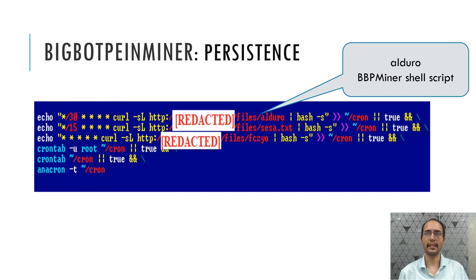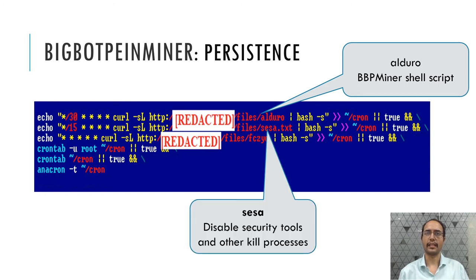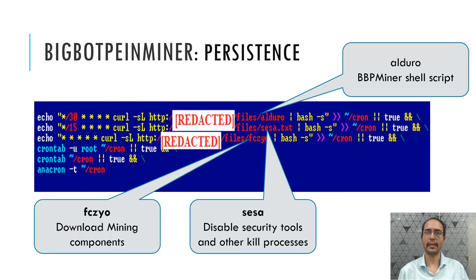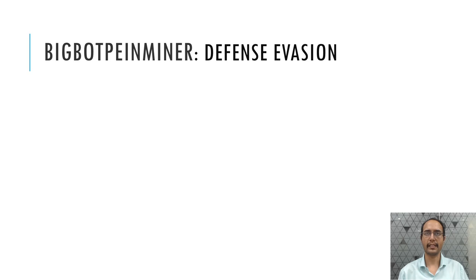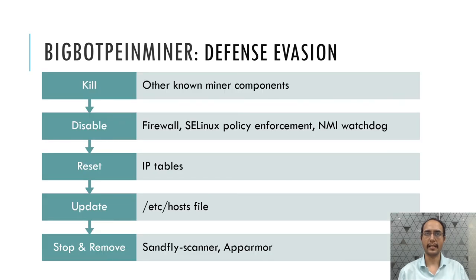For persistence, it schedules cron jobs to execute three shell scripts: the first is the BigBotPen Miner itself, the second is ssa.txt which ensures seamless execution, and the third downloads mining components. For evading detection, it looks for traces of competing miner components and kills them. It disables policy enforcement tools like SELinux, and updates the hosts file to block network connections made by competing miners to their mining pools, and also blocks connections for any security tools present.